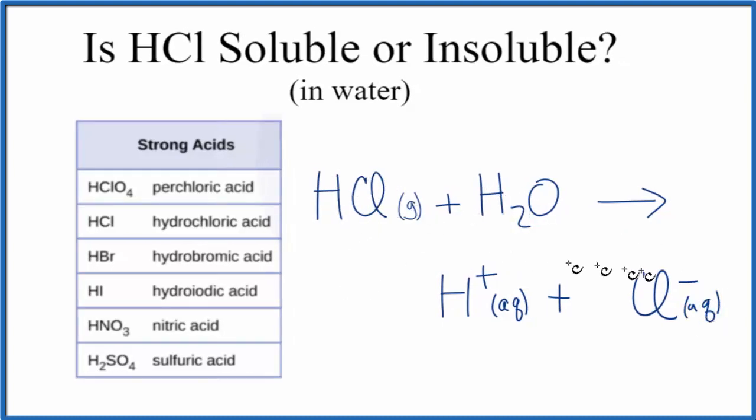We should note that this H plus is often written as H3O plus. That's because the H plus joins with the H2O and we get H3O plus. This is called the hydronium ion. So sometimes you'll see H plus, but if you see H3O plus, they're really the same thing.